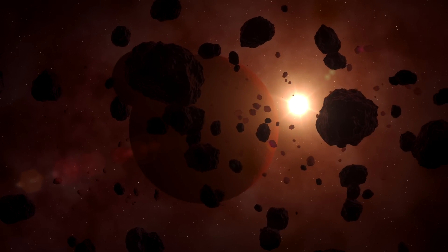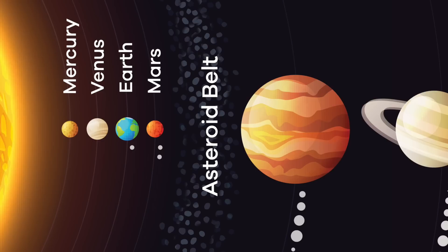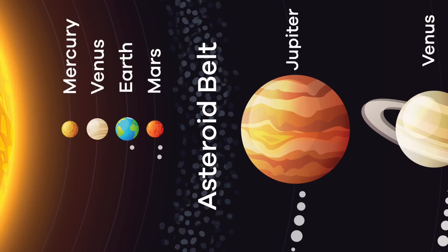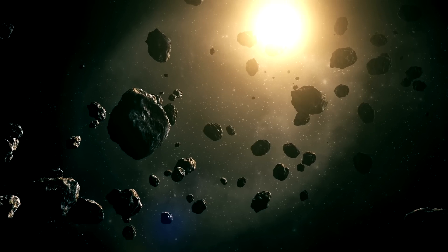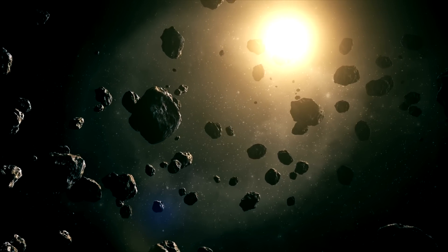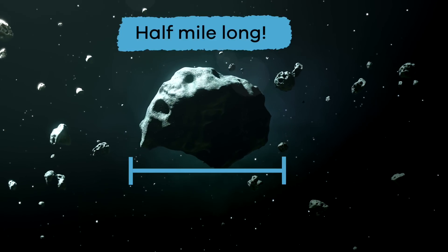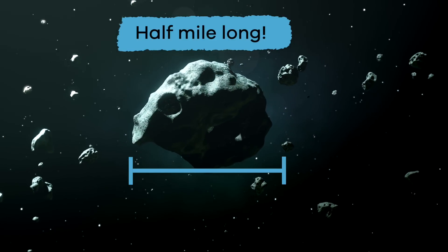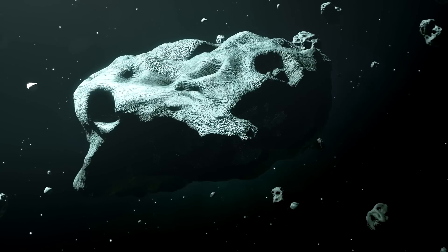Let's talk about the asteroid belt. In an area between Mars and Jupiter lies something called the asteroid belt. That's where most of the asteroids in our solar system hang out while they orbit the sun. The asteroid belt contains around a million asteroids that are over a half a mile long, and there are millions more that are smaller than that. Pretty cool, huh?